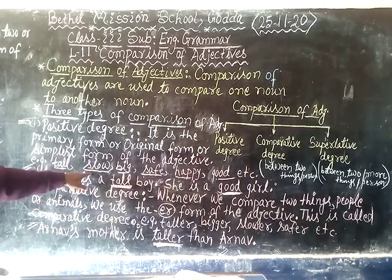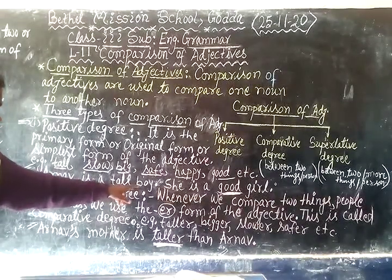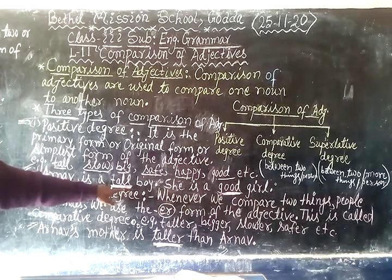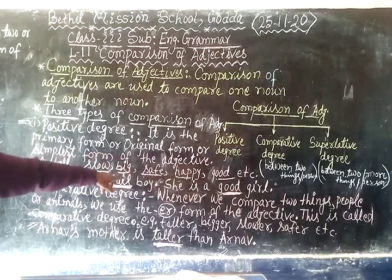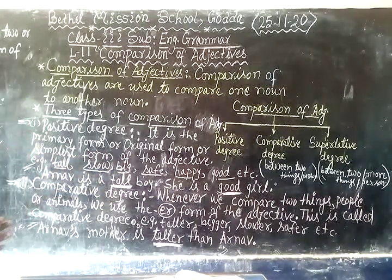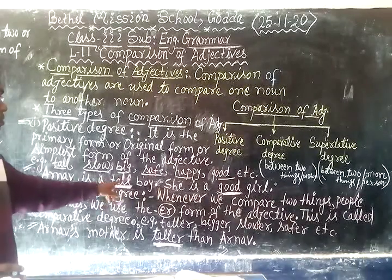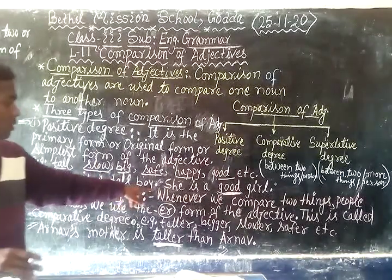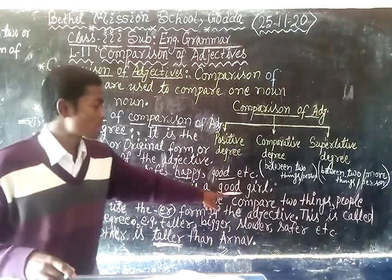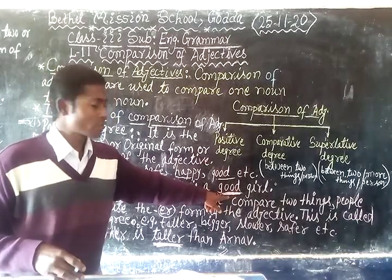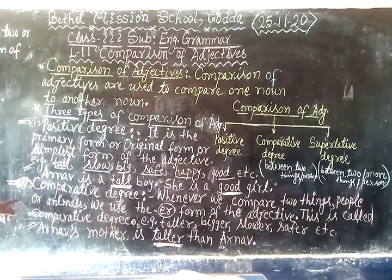Let us see the adjective used in a sentence. 'Anas is a tall boy' — here 'tall' is the adjective, saying about the quality of the boy. 'She is a good girl' — here 'good' is saying about the quality of the girl. This is the original or simplest primary form of the adjective.